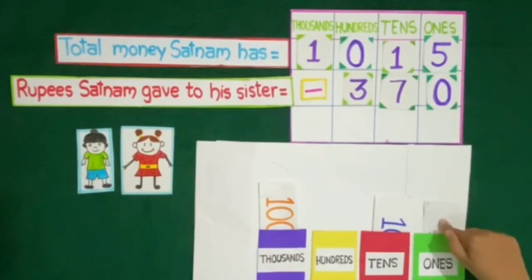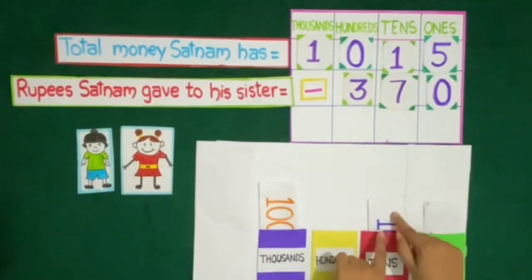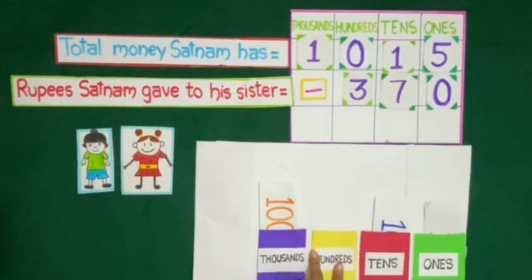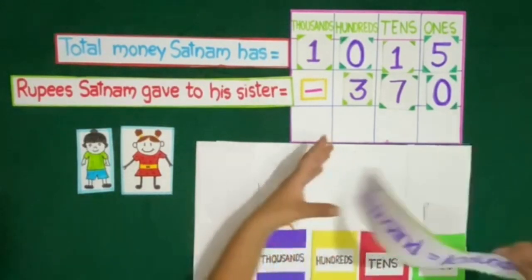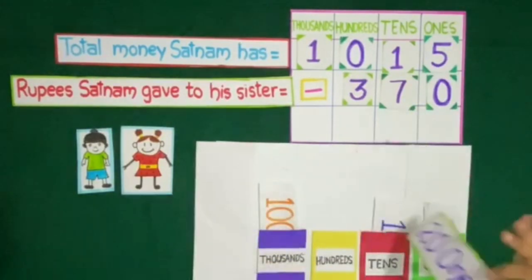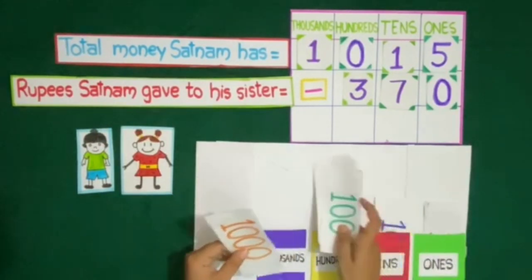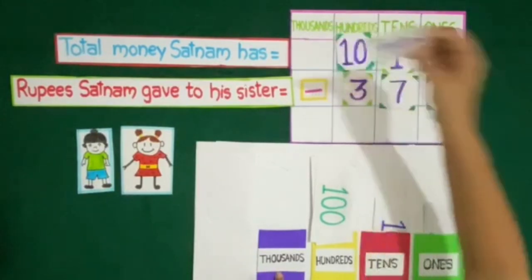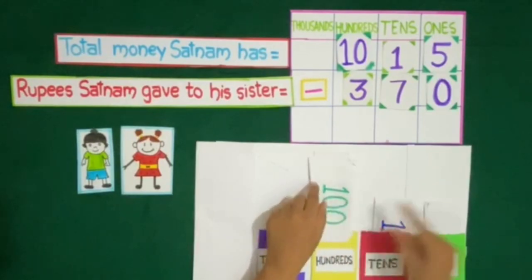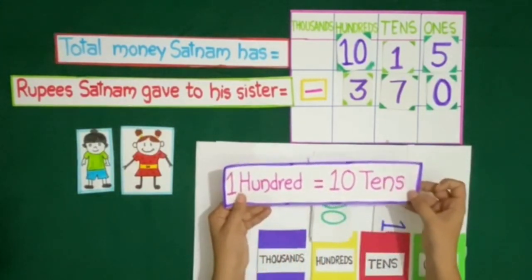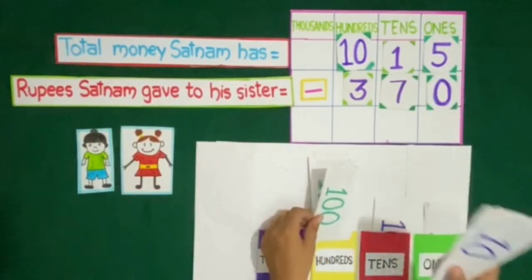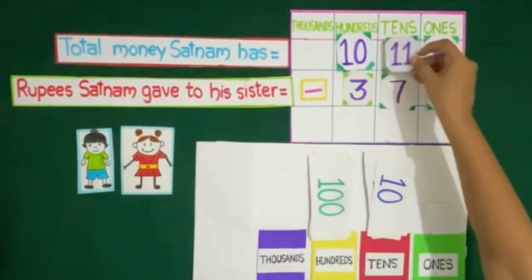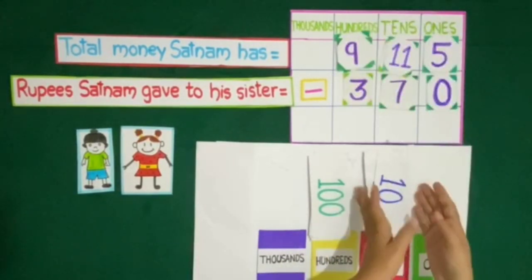Since the ones digit of 370 is 0, we do not need any 1 rupee note. We need 70 rupees but Satnam has only 10 rupees at the 10's place. To give his sister 70 rupees we need to change a 100 rupee note, but there is no 100 rupee note. So we change the 1000 rupee note into 10 notes of 100 rupees. We then change one 100 rupee note into 10 notes of rupees 10, giving us 11 notes of rupees 10 and 9 notes of rupees 100.